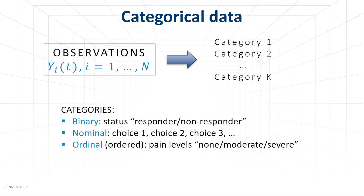Categories can be binary — for example, to describe if a patient responds or not to a therapy. These binary categories are a subset of nominal categories where several options are possible. Then if the categories are ordered, we call them ordinal. An example is pain level, which can be described as none, moderate, or severe.